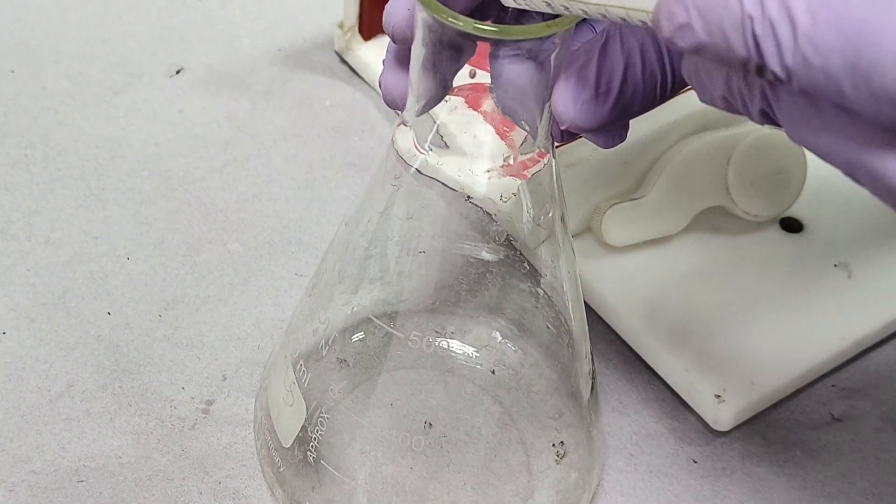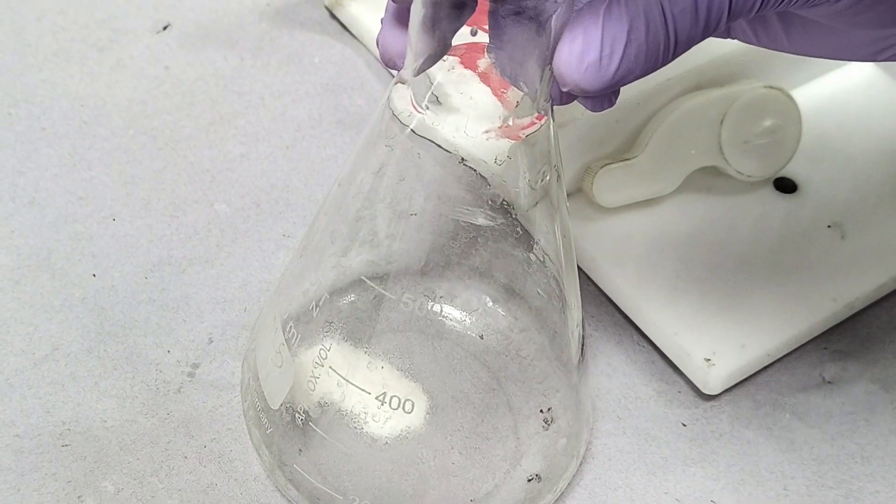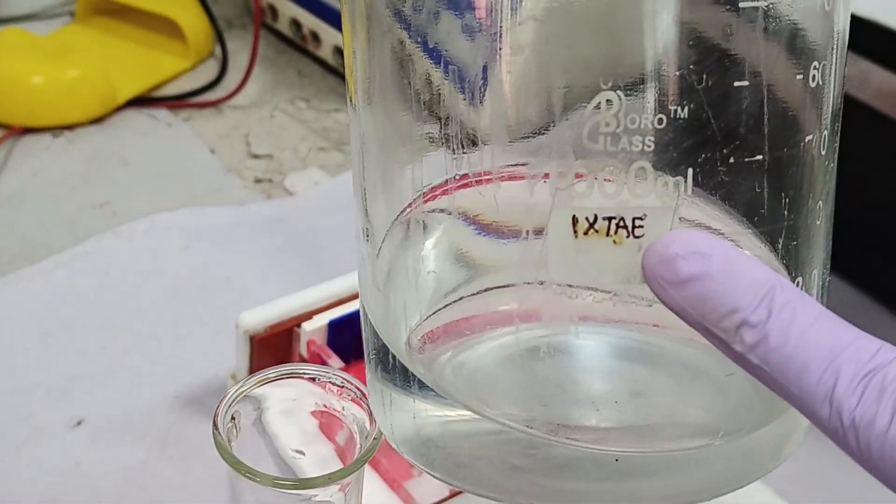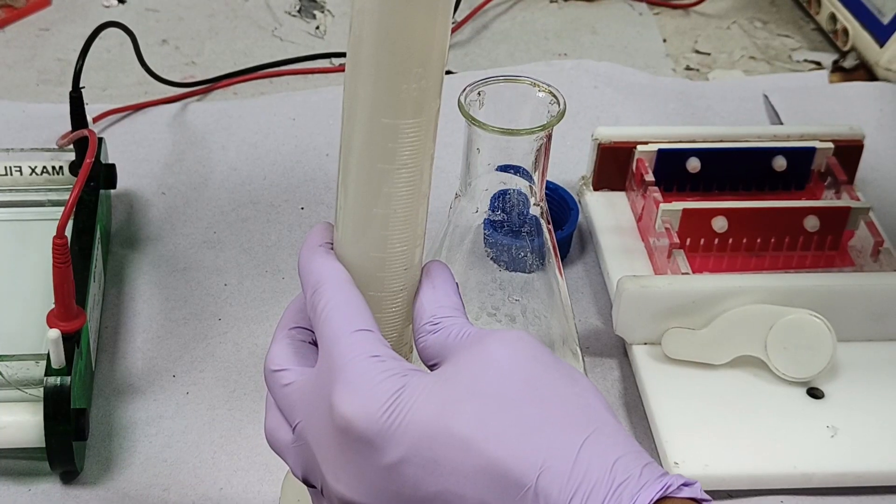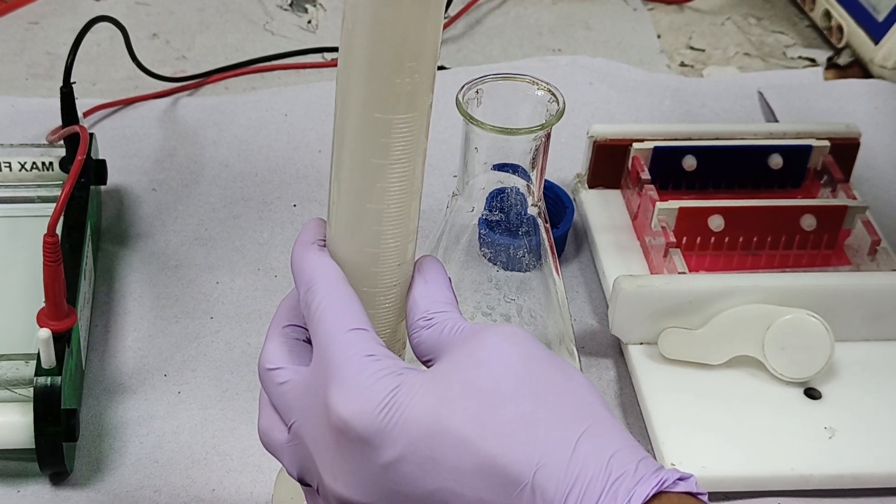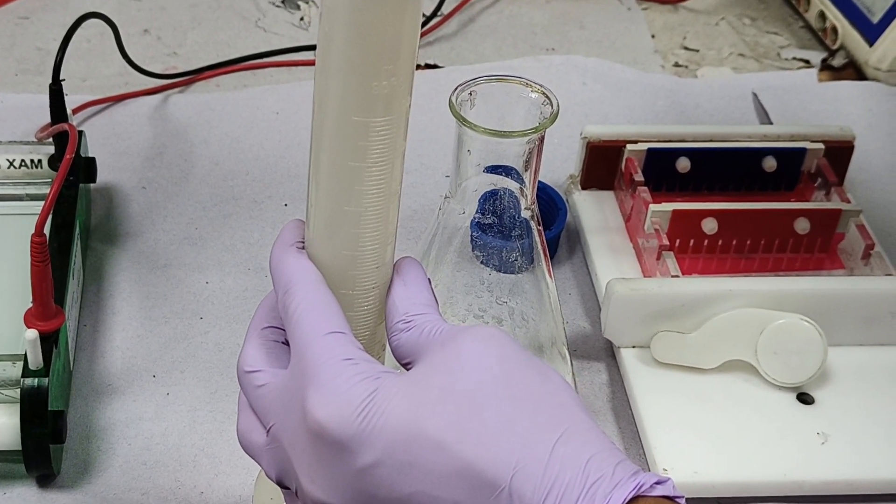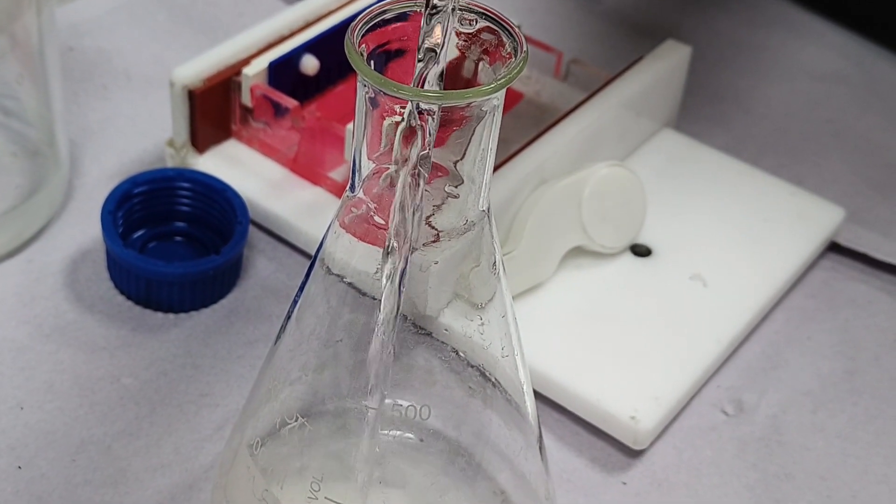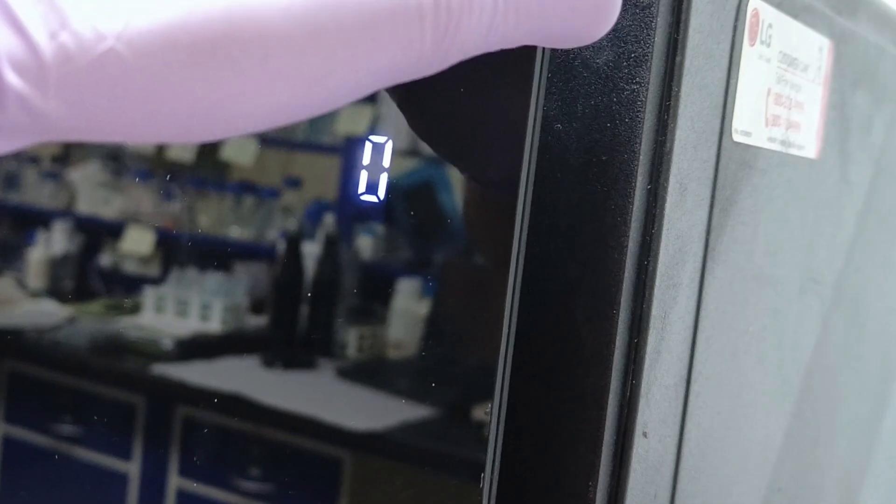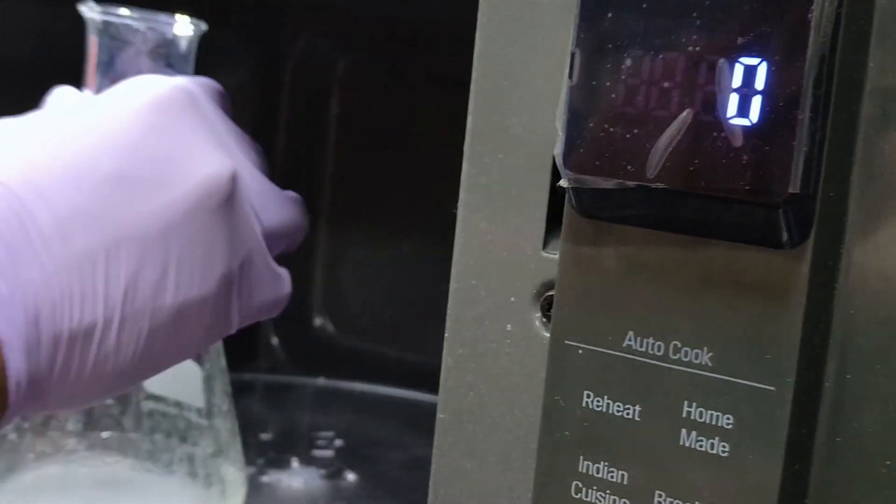Add the agarose to the conical flask. Measure about 100 ml of 1X TAE buffer, also known as the Tris acetate buffer, using a measuring cylinder, and then pour into the flask. Gently swirl the flask, and microwave it for about 2-3 minutes to bring the agarose to boil.